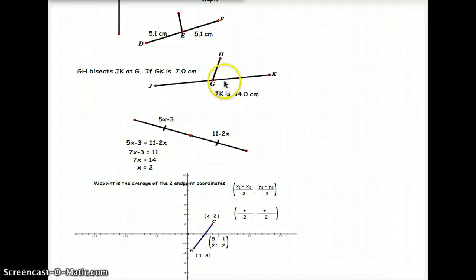Since both of these are 7, we know G is the midpoint, and we know GH bisects JK because it creates a midpoint.